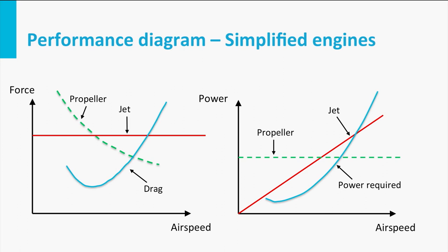Propellers with a variable pitch system can be assumed to have more or less constant power available as a function of airspeed. The diagrams that you see here are called performance diagrams.